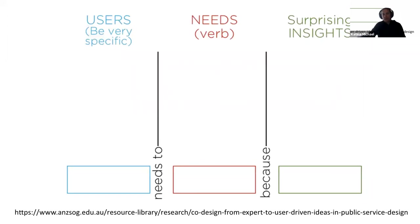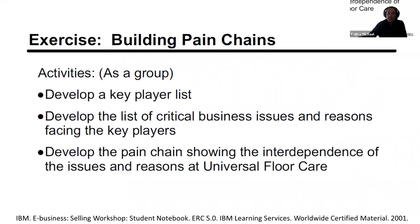It's really about users being very specific with their needs, and then generating insights. The following slides come from IBM's e-business selling workshop — material I had the joy of teaching back in 2001–2002, created by IBM Learning Services as a worldwide certified program. In the discover stage, we're building pain chains. This hypothetical group assignment asks you to develop a key players list, a list of critical business issues and reasons facing key players, and develop the pain chain showing the interdependence of issues at a fictitious company called Universal Floor Care.